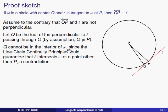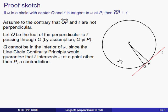Q cannot be in the interior of the circle, because if Q were in the interior of the circle, line L would include a point in the interior, and the line-circle continuity principle would then mean that line L intersects the circle in two different points. But that's contrary to our assumption that L is tangent to the circle, so Q cannot be in the interior of omega.